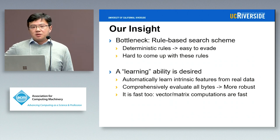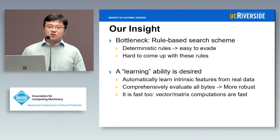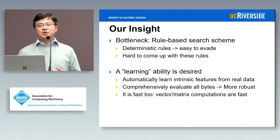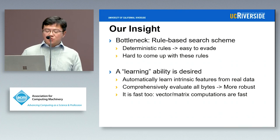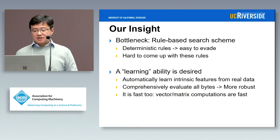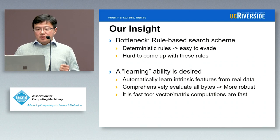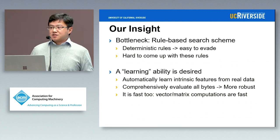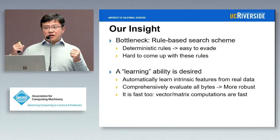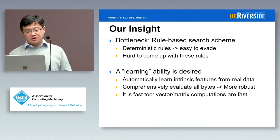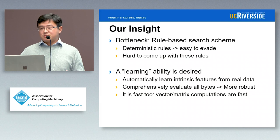We believe that a learning capability is essential for the following reasons. First, we want to automatically learn intrinsic features from real data instead of manually crafting features or rules. Second, we comprehensively evaluate all the bytes — not just a small set — so that if an attacker manipulates a small portion of bytes, it doesn't affect our final detection results. Surprisingly, this approach is actually really fast, because vector and matrix computations are generally pretty fast — even on CPU, not to mention GPU.